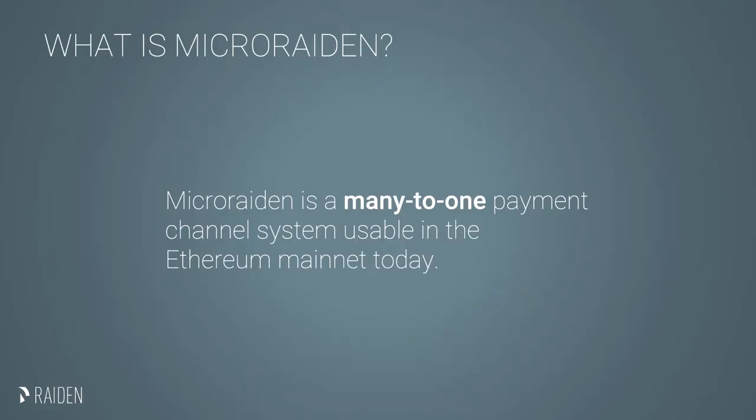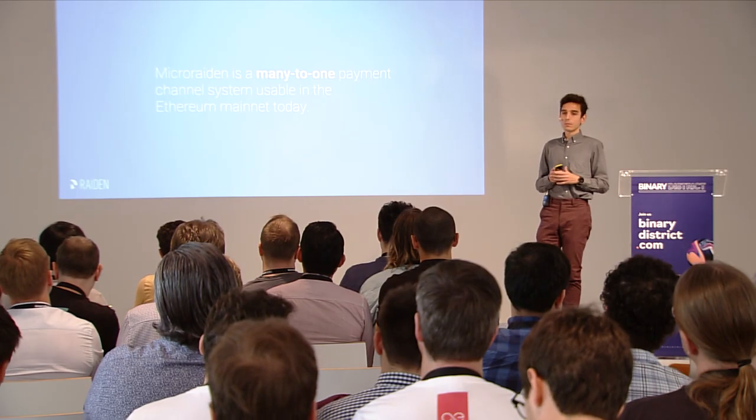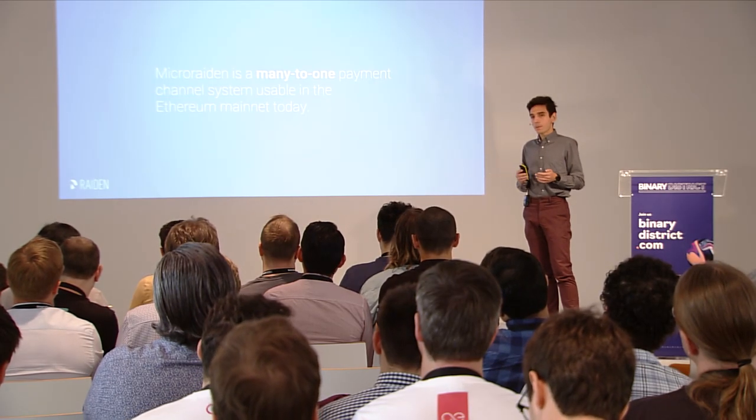Another thing you may have heard about is Micro Raiden — it's essentially Raiden's little sister. While Raiden is a many-to-many multi-hop payment channel network, Micro Raiden is quite simpler. It's only one-way, no-hop, many-clients-to-one-receiver payment system. Its applications are mostly app stores or paid APIs. Because it's only a single-hop and many clients to one receiver, it is much more technologically simple, and thus we already have a release on the mainnet.